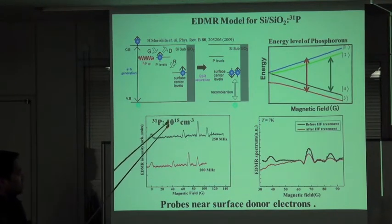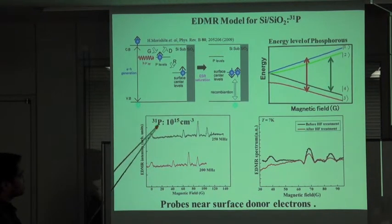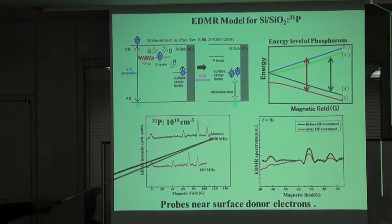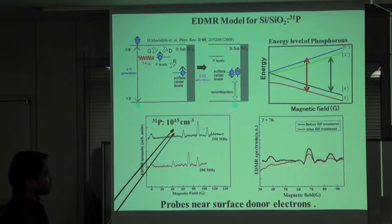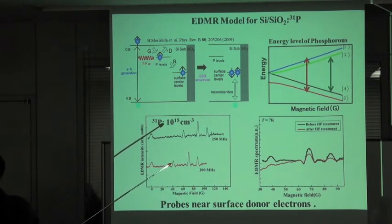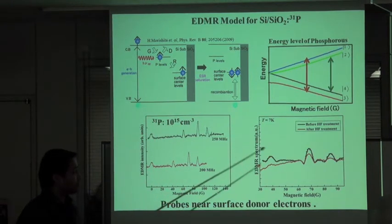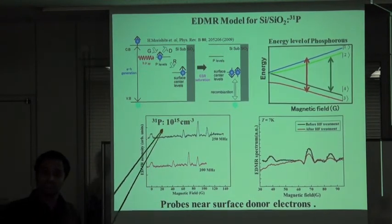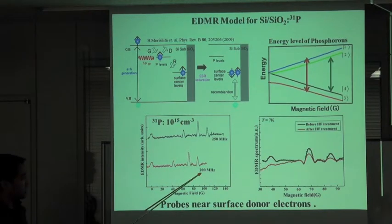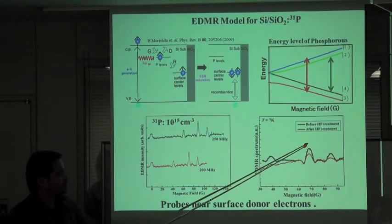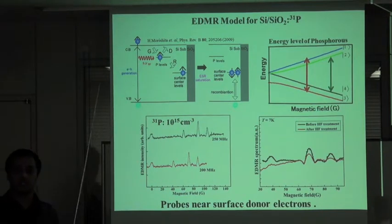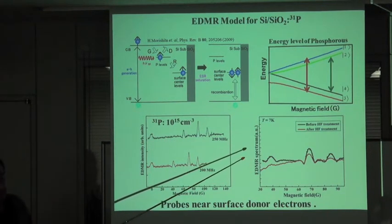Here I show the EDMR signal for phosphorus concentration of 10^15 per cm³. We see two lines from phosphorus and one from the PV center at two different resonance frequencies. To confirm whether the signal is only from the surface, we use HF to remove the surface oxide. The black curve shows the EDMR signal before HF treatment and the red one after. After HF treatment, the intensity of all three lines—phosphorus and PV center—goes down, confirming we removed the PV center and reducing the total number of spin pairs contributing to the EDMR signal.